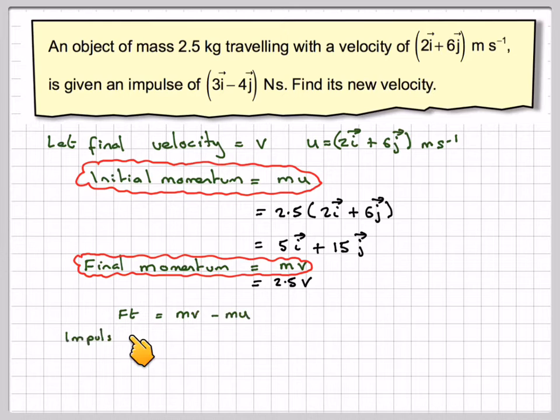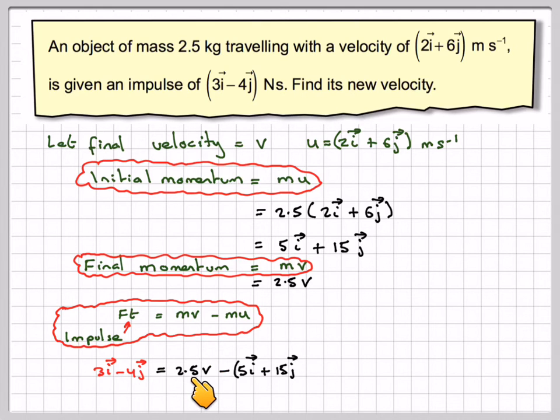However, we know that ft is equal to mv minus mu. ft is called impulse, and we have a vector for impulse, so therefore we can say 3i minus 4j is equal to 2.5v minus 5i plus 15j.